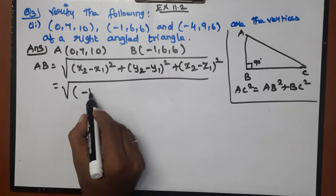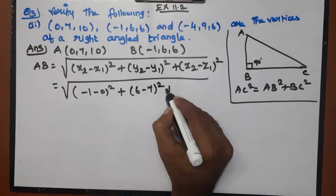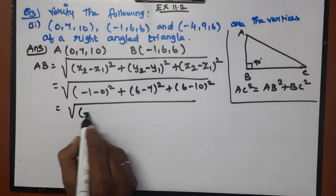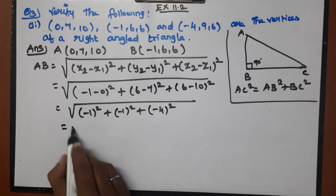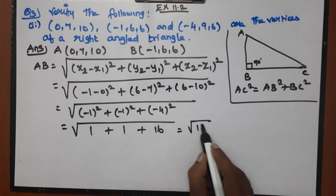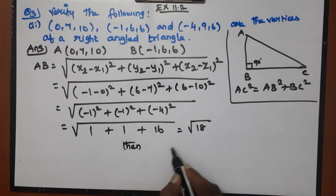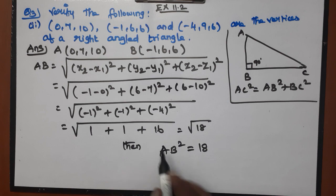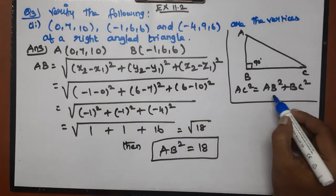AB = √[(−1)² + (−1)² + (−4)²] = √[1 + 1 + 16] = √18. Therefore AB² = 18.